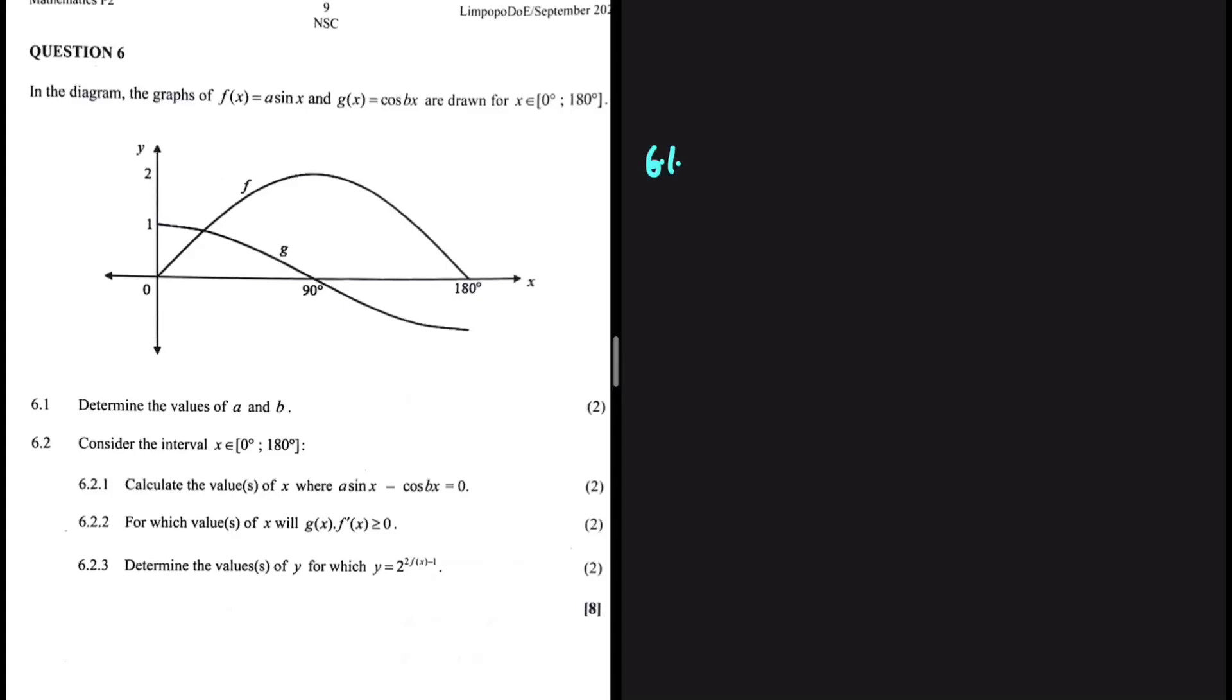Determine the values of a and b. We have f of x which equals a sine x and we have g of x which equals cos bx.